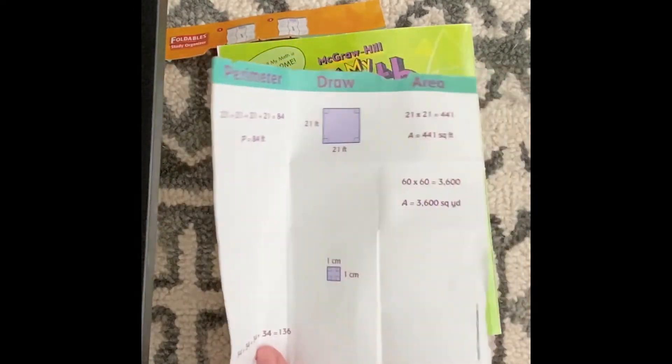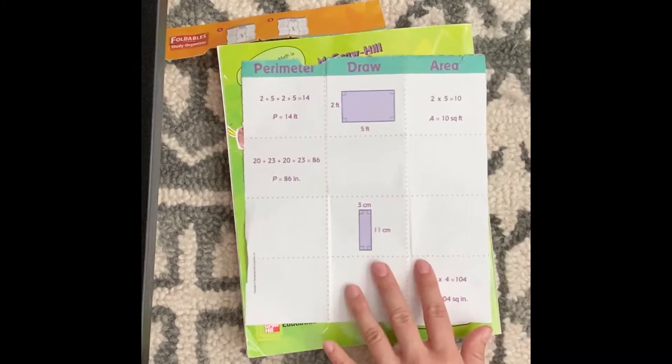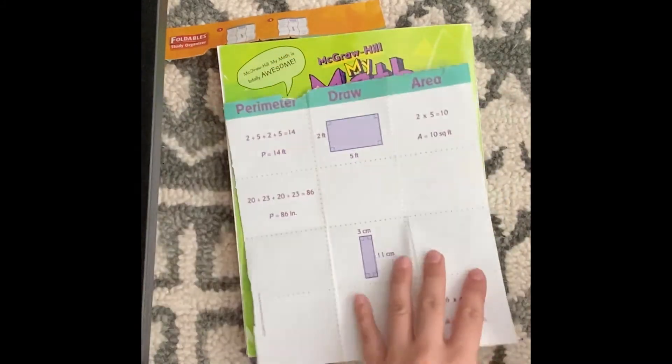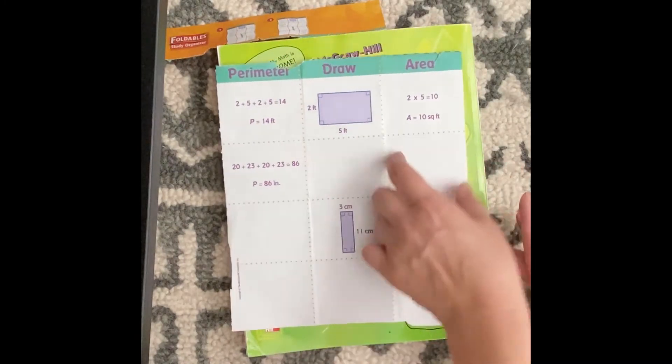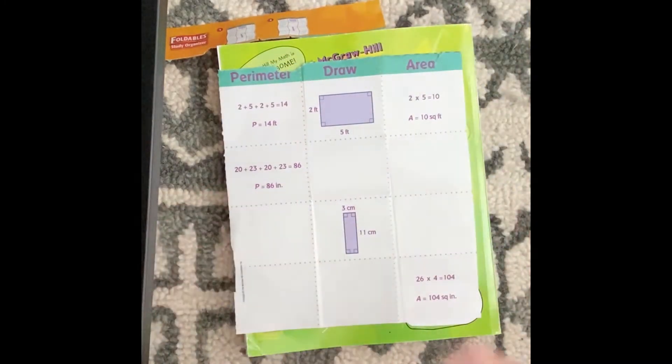All right so now I have, see how it makes like a chart on the back of your paper. Okay so together we are going to fill out some of these. We have a perimeter section, the drawing of the shape that you're finding the perimeter of, and then the area section. So I'm using a pen but you should be using a pencil.